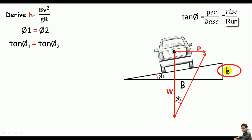breadth, so h/B is tan θ₁, which equals tan θ₂. For tan θ₂, we have the centrifugal force as the perpendicular and the base is